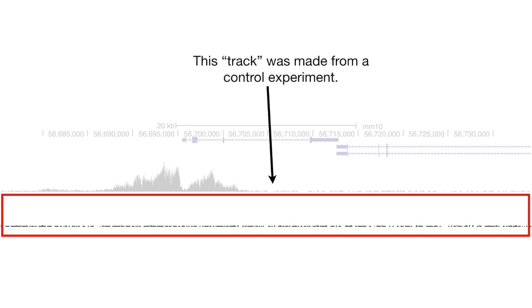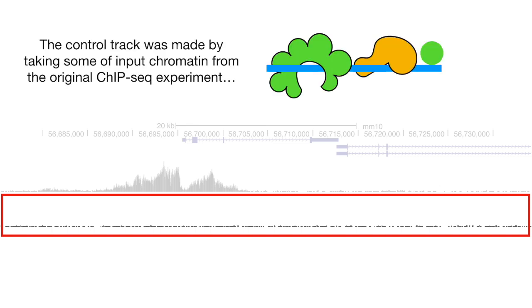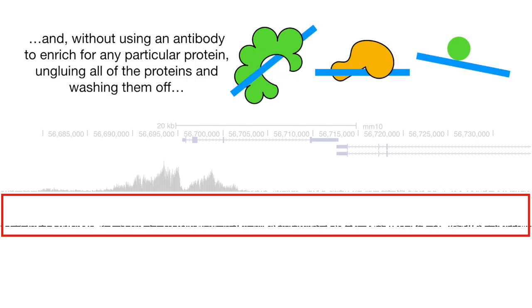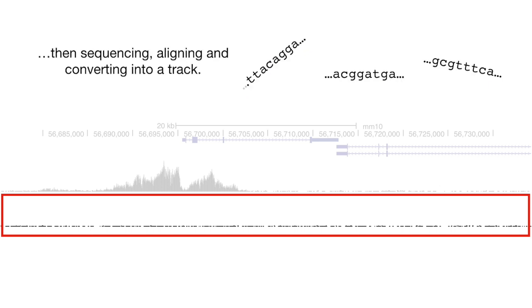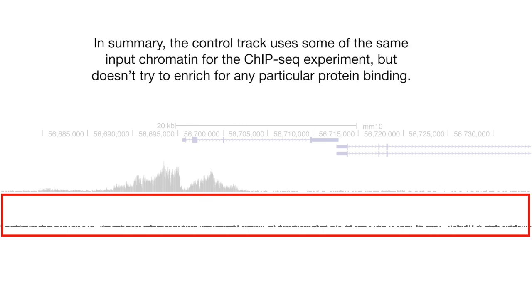This track was made from a control experiment. The control track was made by taking some of the input chromatin from the original ChIP-seq experiment, and without using an antibody to enrich for any particular protein, ungluing all the proteins and washing them off, then sequencing, aligning, and converting into a track. In summary, the control track uses some of the same input chromatin for the ChIP-seq experiment but doesn't try to enrich for any particular protein binding.